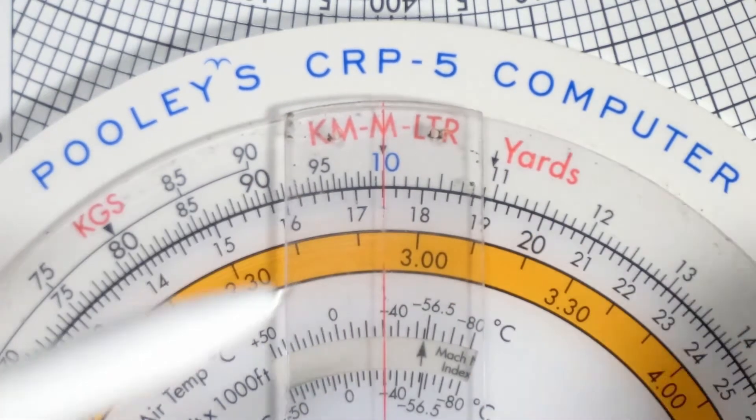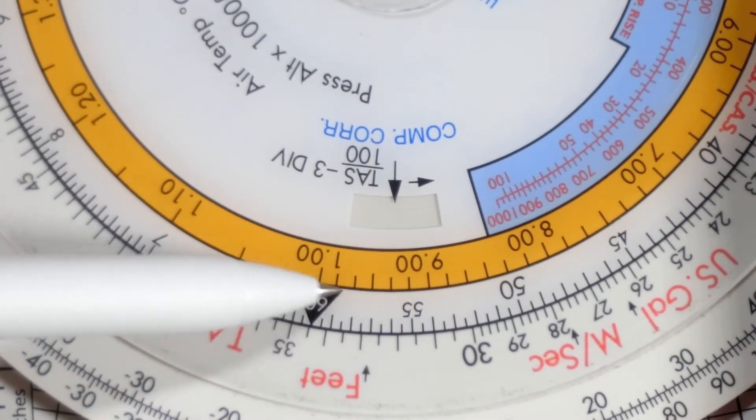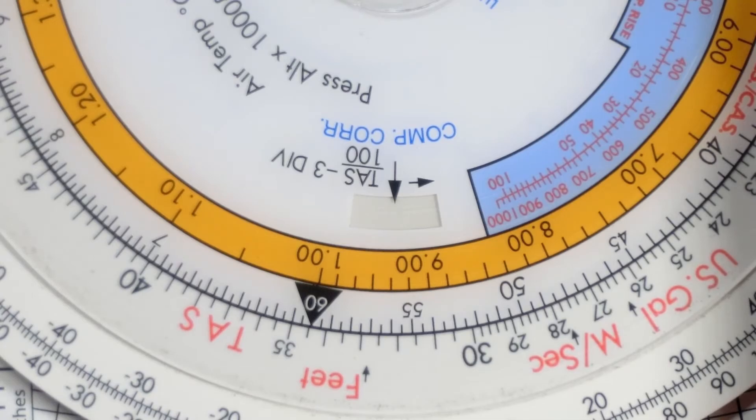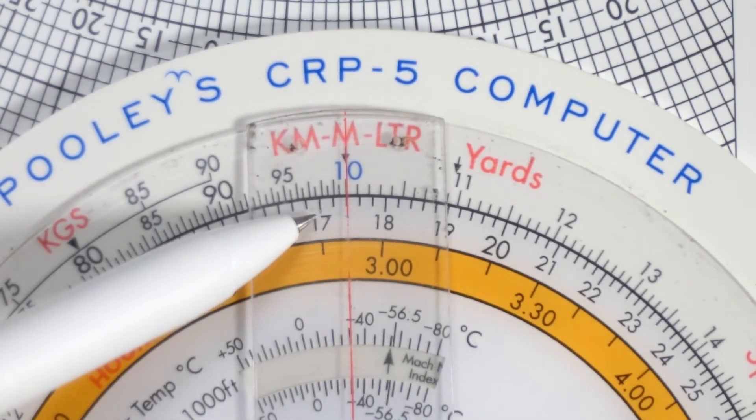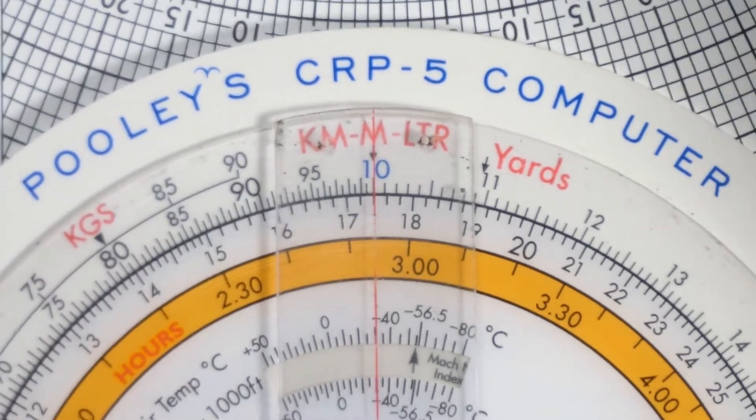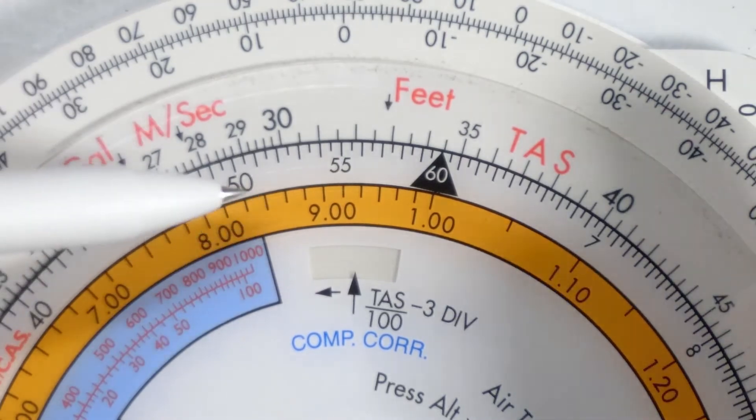174 meters would be the equivalent feet that we read off the bottom of the scale that says feet. So 174 meters would be, and let's turn the CRP around so that feet is up top.